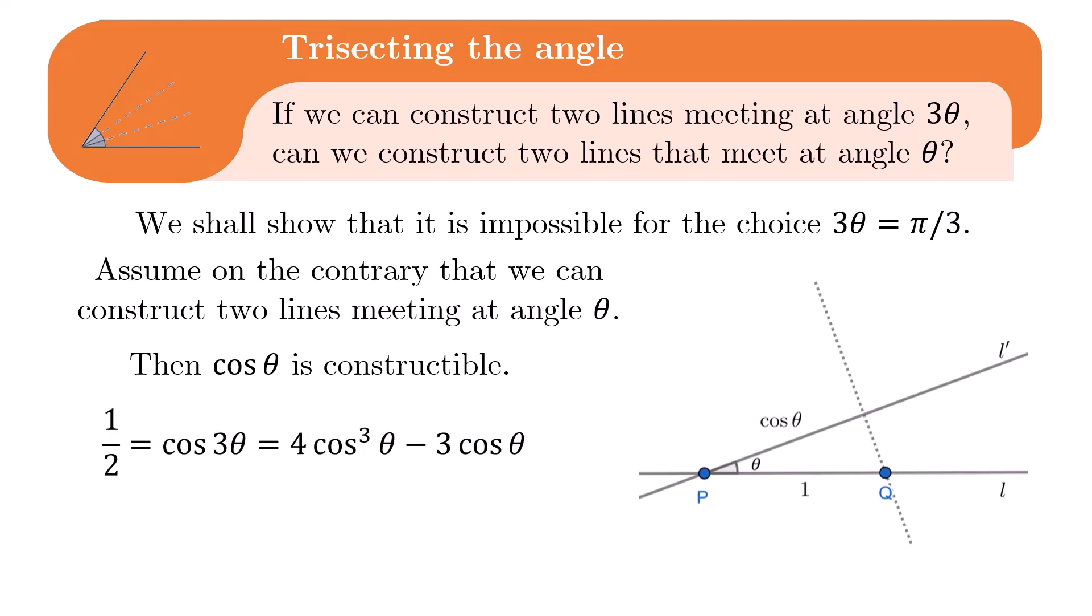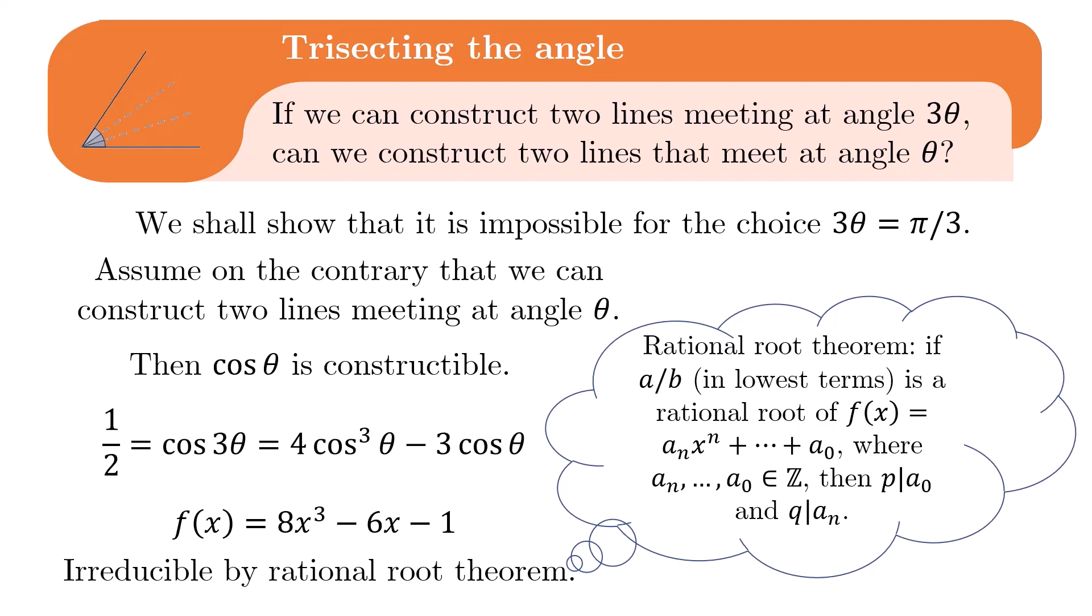But using the triple angle formula, we can show that the real number cosine theta satisfies the polynomial 8x cubed minus 6x minus 1. If this cubic polynomial can be factorized over the rationals, it must have a rational root. The rational root theorem limits the possible candidates and we can check that these candidates are all not roots of f. Thus, the degree of cosine theta is 3. But cosine theta is supposed to be constructible. This is a contradiction.